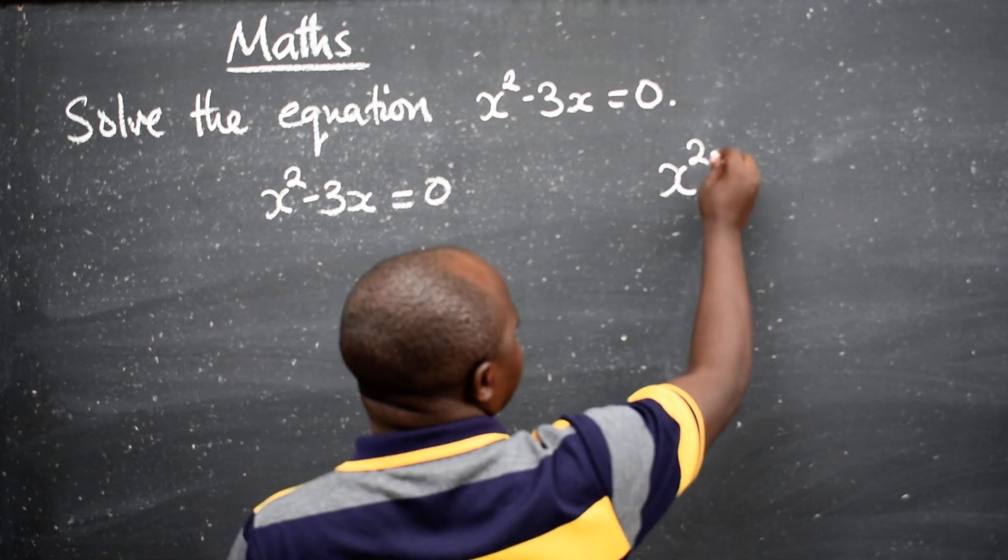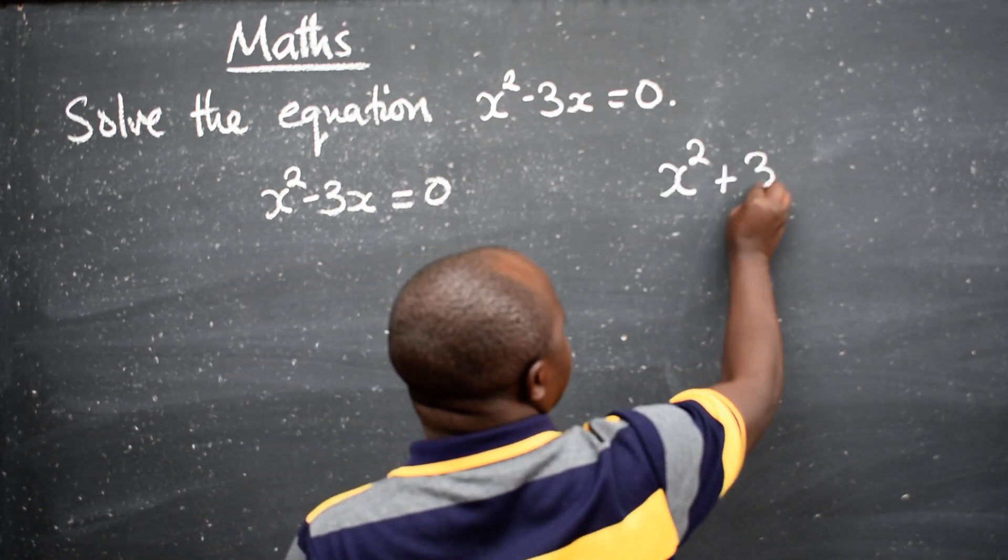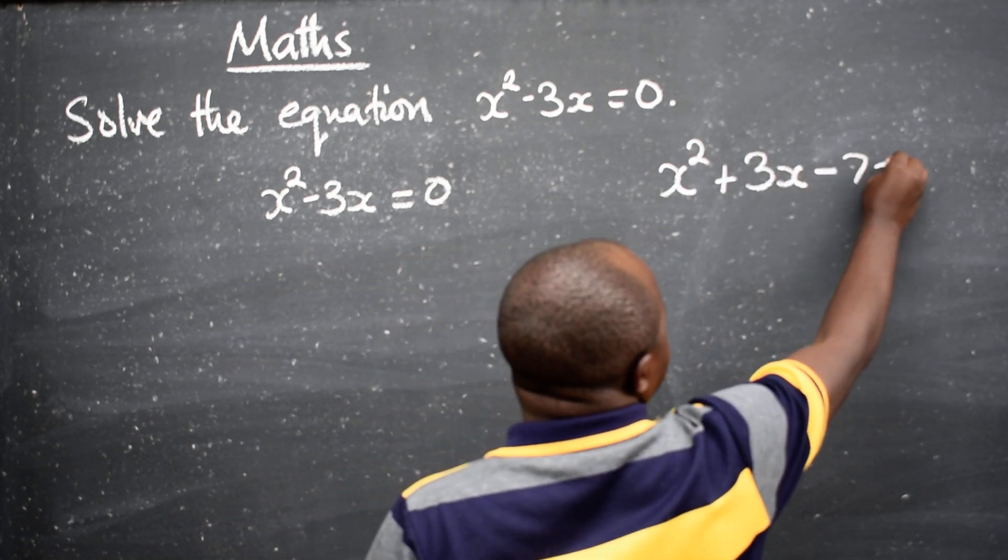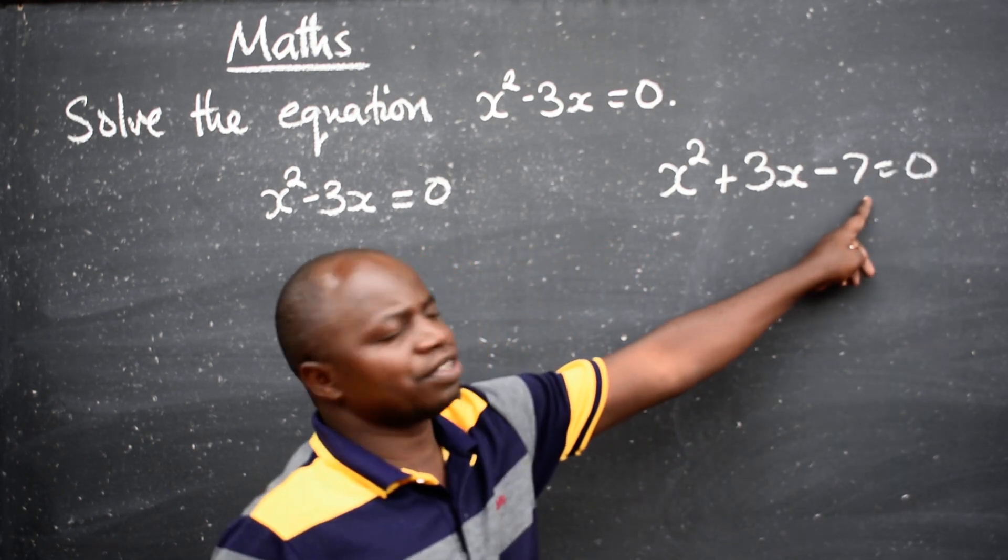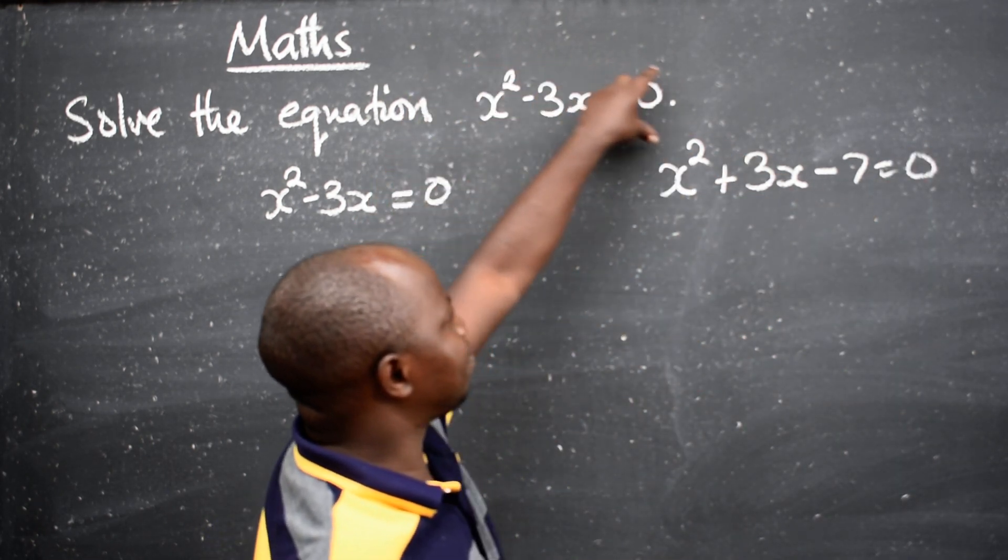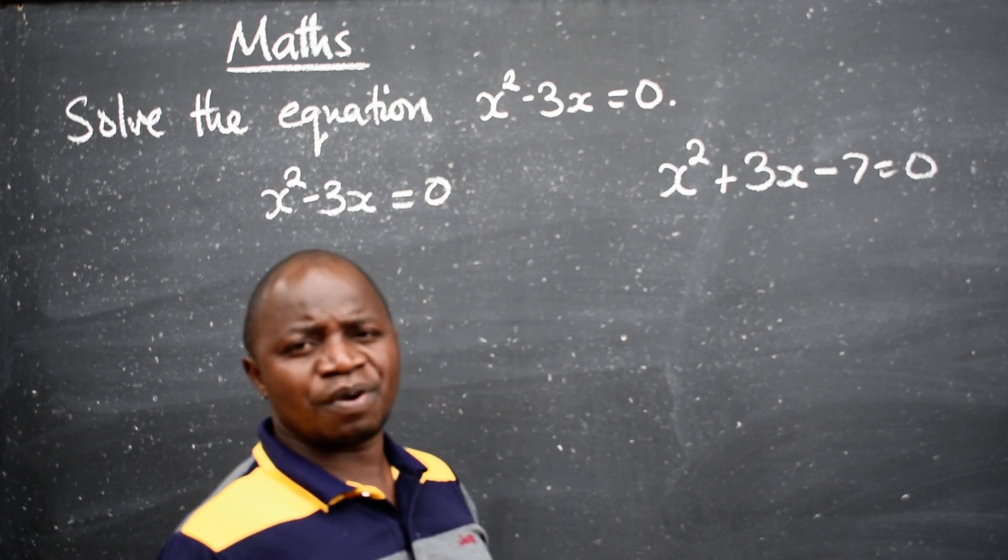When we have maybe x squared plus 3x minus 7 is equal to zero, the one that has got three terms, it is the same. This is also quadratic.